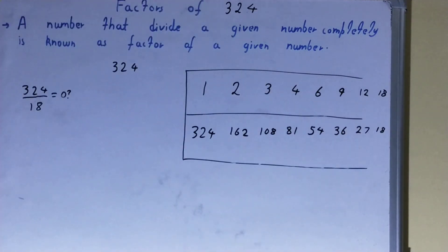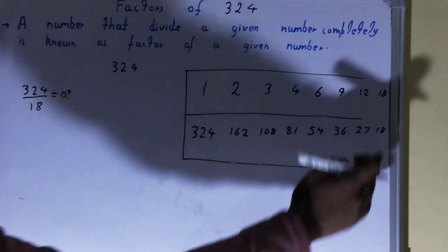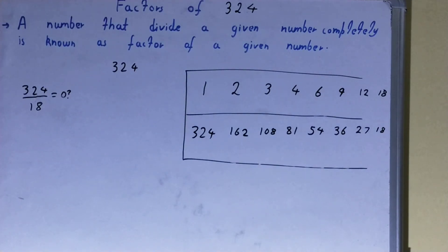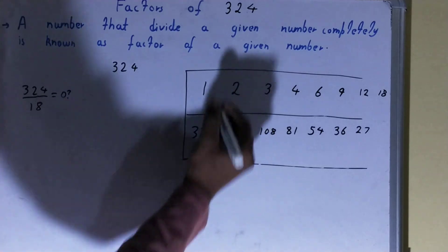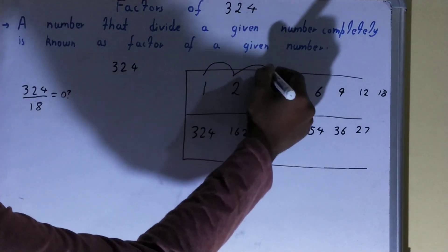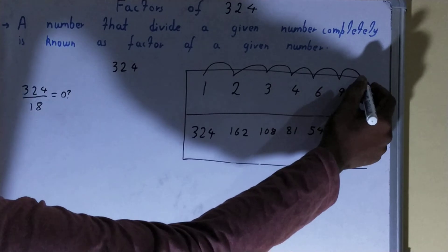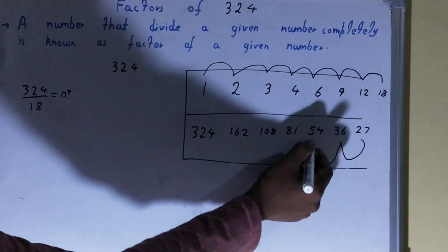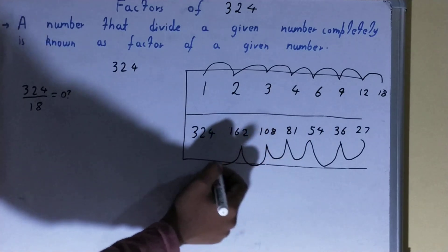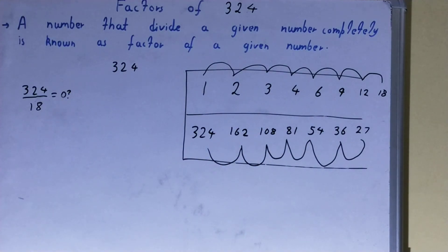Since we got 18 appearing in both lists, our work is done. The complete set of factors for 324 is: 1, 2, 3, 4, 6, 9, 12, 18, 27, 36, 54, 81, 108, 162, and 324. If you found the video helpful, please like and consider subscribing. Thanks for watching!